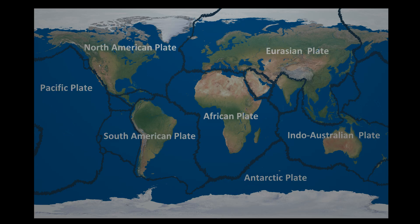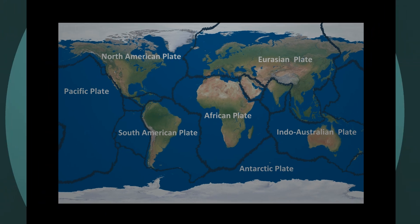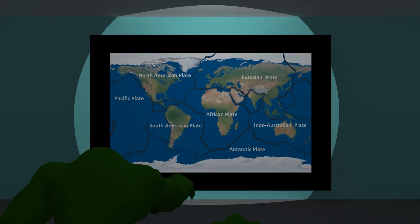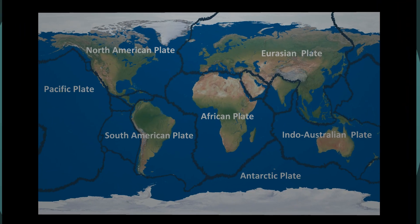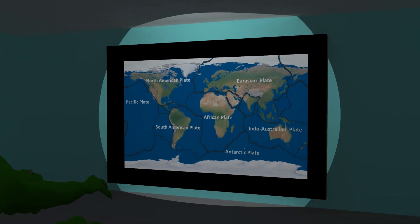There are seven major plates and dozens of smaller plates all constantly in motion. So don't get too attached to this map. In 250 million years, visitors to some future museum on the supercontinent of Pangea Ultima may look and laugh at the strange shapes of our fragmented world.